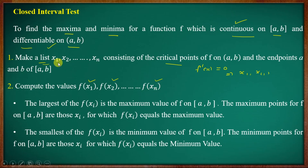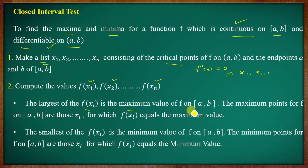If you have a critical point, f(x₁), f(x₂), ..., f(xₙ) will vary. The critical points will be listed. If you compute the values f(x₁) and f(x₂), the largest of the f(x) values is the maximum value of f. If you have the smallest value of f(x), then you have the minimum value.